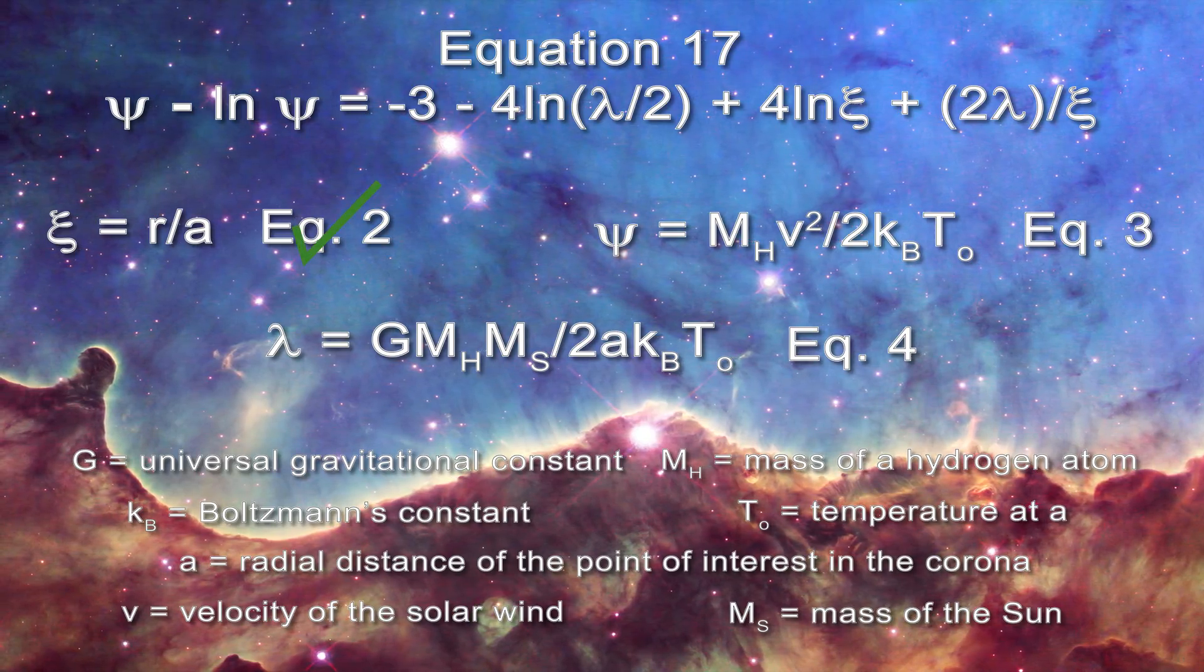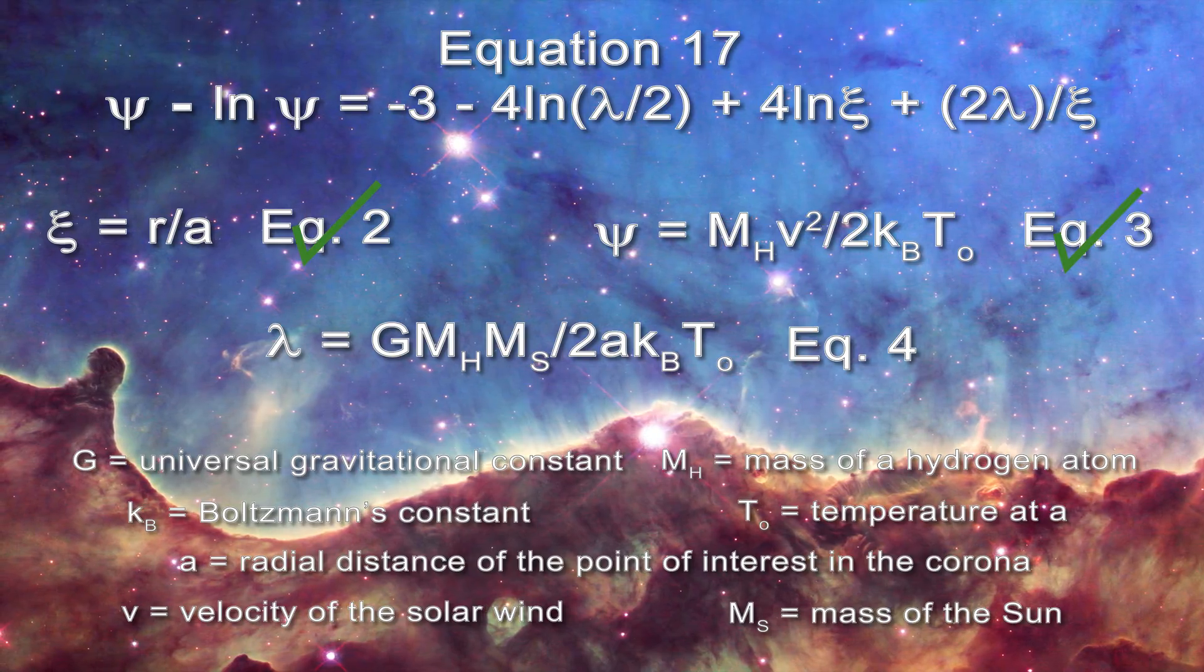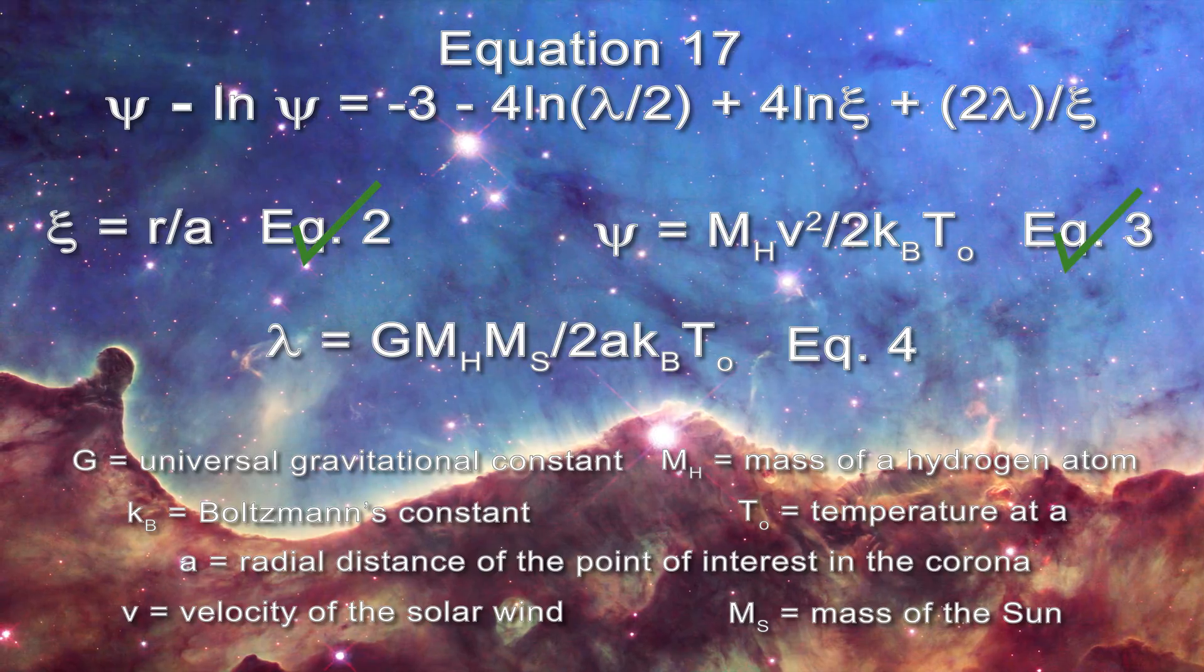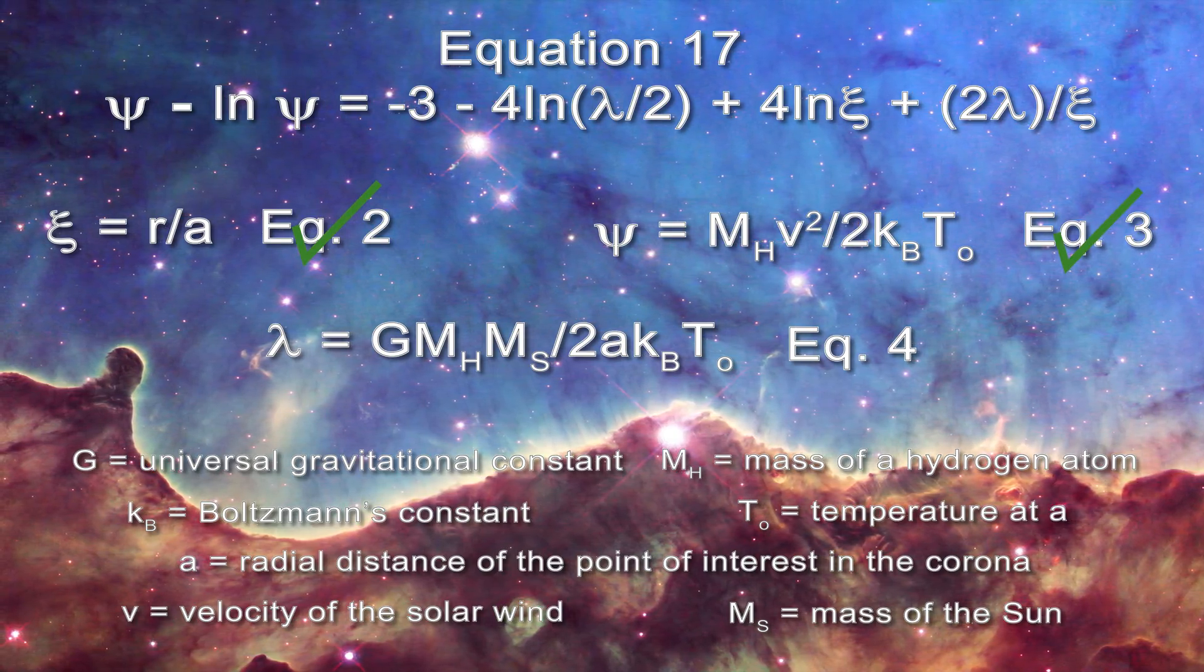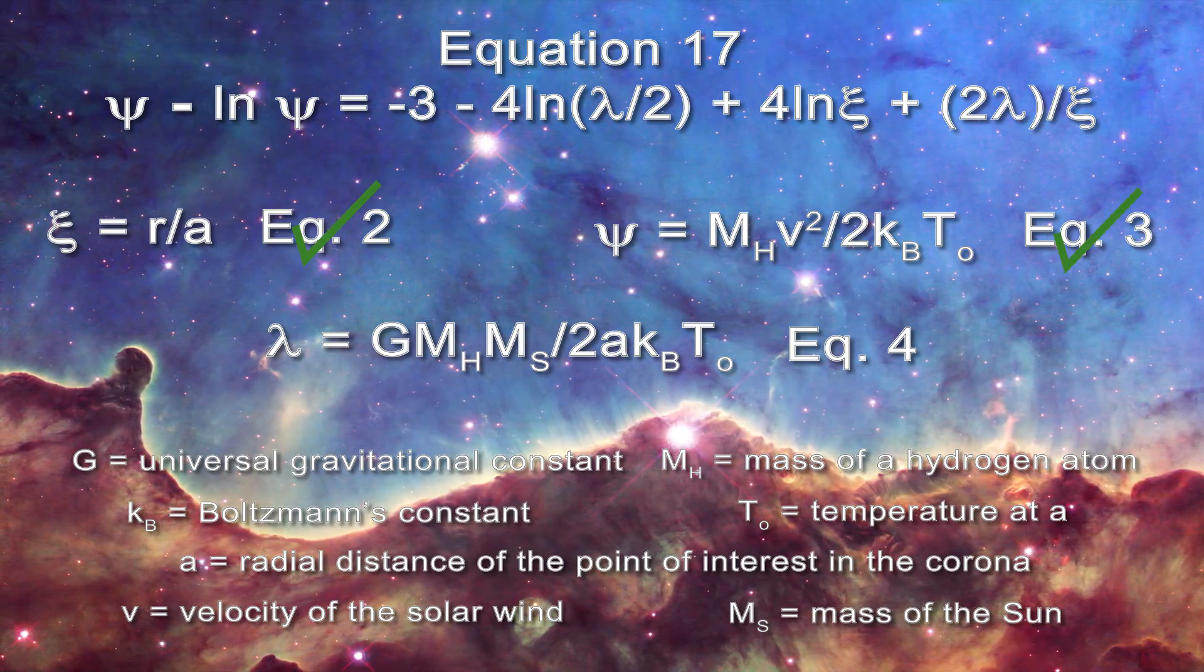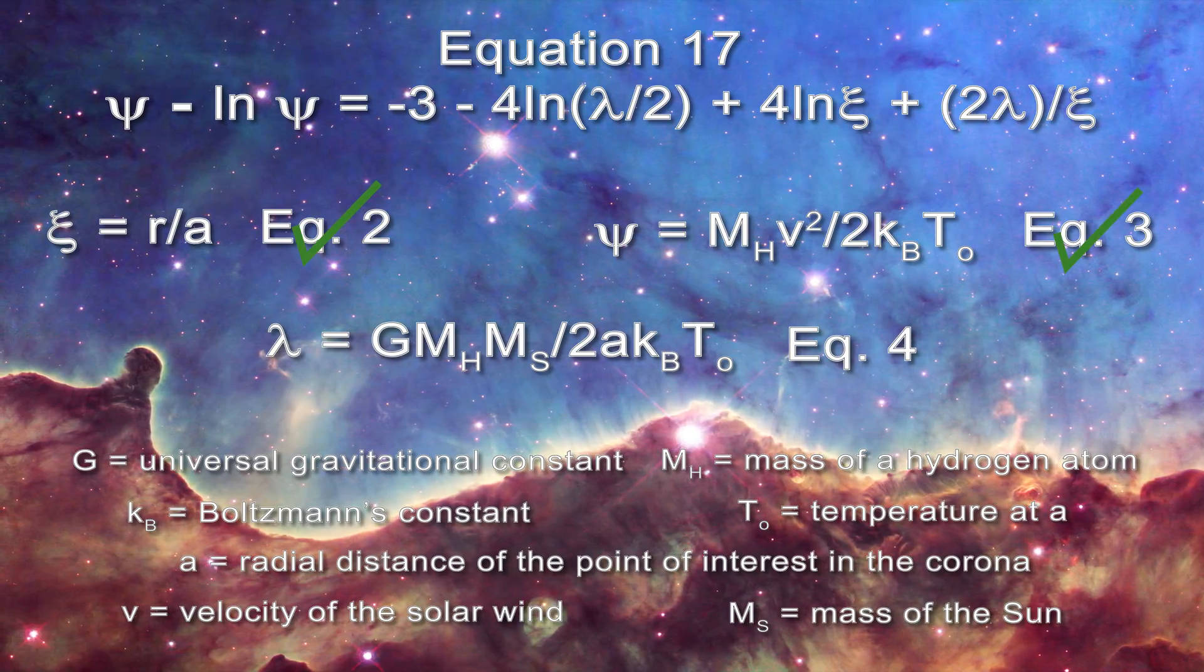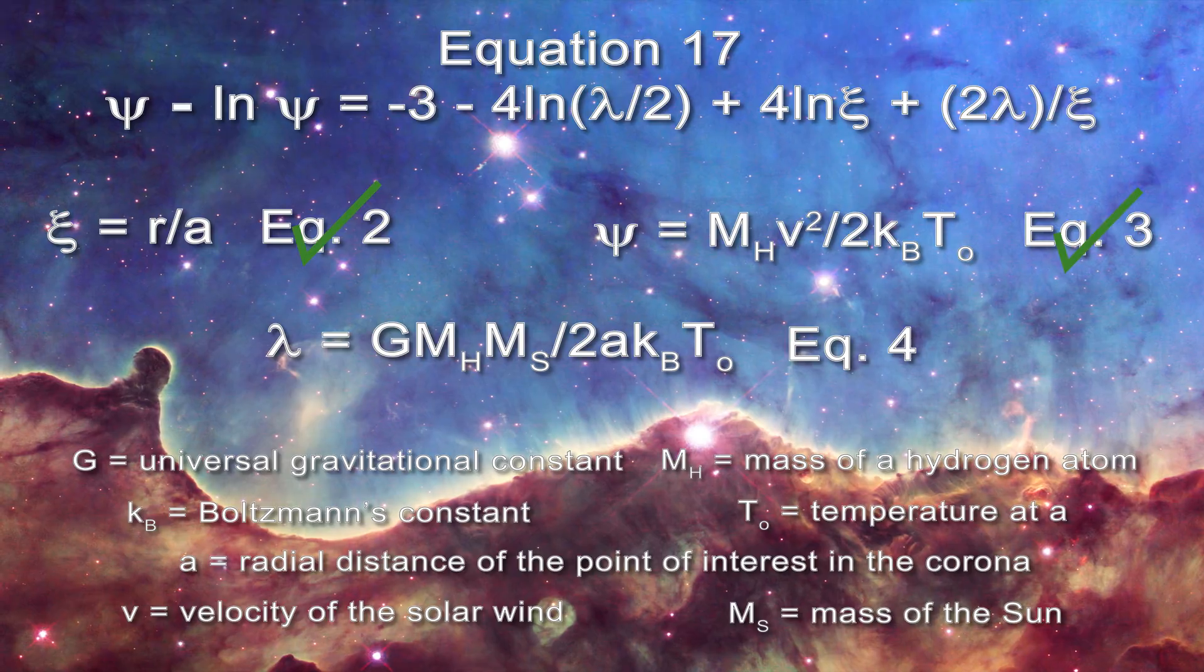Thermodynamically equations two and three have no problem. In equation two, r is neither intensive nor extensive. However, a can be expressed in terms of scalar multiples of r. As a result, this expression is thermodynamically balanced. In equation three, the mass of the proton is a constant and the velocity of the solar wind is intensive. As a result, this expression is thermodynamically balanced.